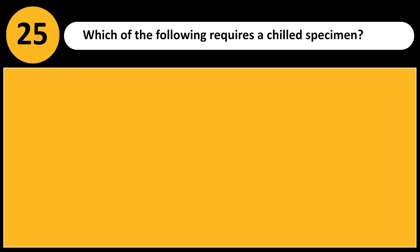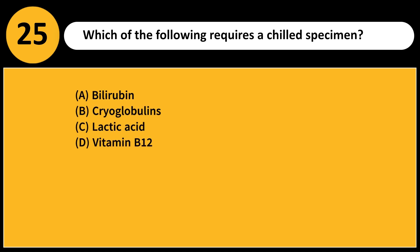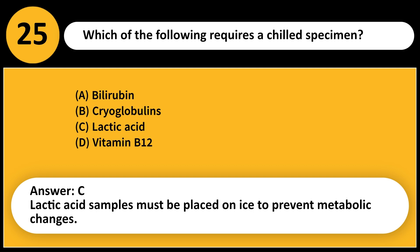Which of the following requires a chilled specimen? A. Bilirubin. B. Cryoglobulins. C. Lactic acid. D. Vitamin B12. Answer: C. Lactic acid samples must be placed on ice to prevent metabolic changes.